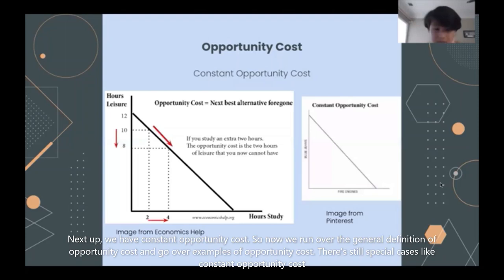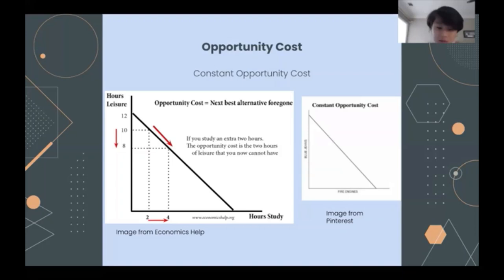Next up, we have constant opportunity cost. Now that we went over the general definition and example of opportunity cost a little bit, there's also a special case called constant opportunity cost, where the resources are adaptable to produce both alternative goods, which will also result in a straight production possibility curve.